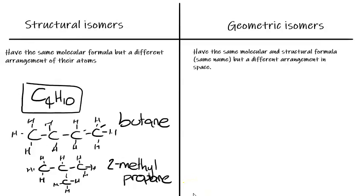Geometric isomers are isomers that have the same molecular formula and the same structural formula — or the same name — but the way that the atoms are arranged is different in space. This can only happen if we've got a double bond present in the molecule. The very common example that gets used is butene. Butene can be drawn like this where we're emphasizing the double bond.